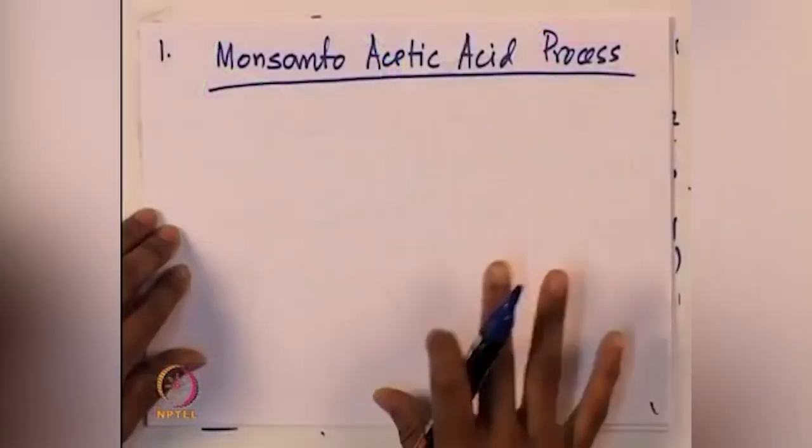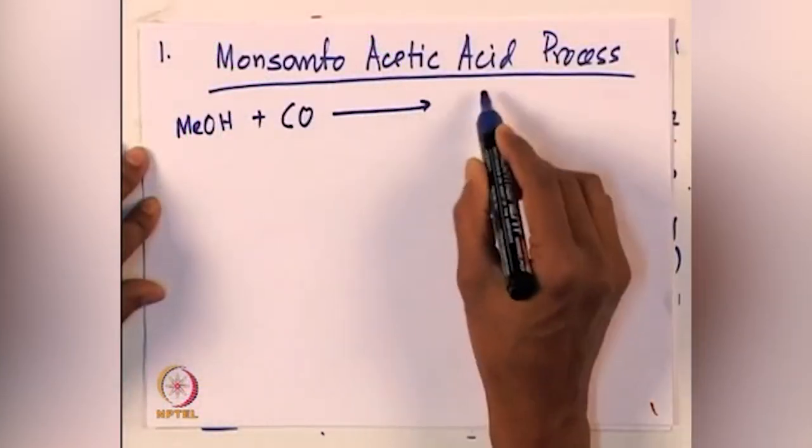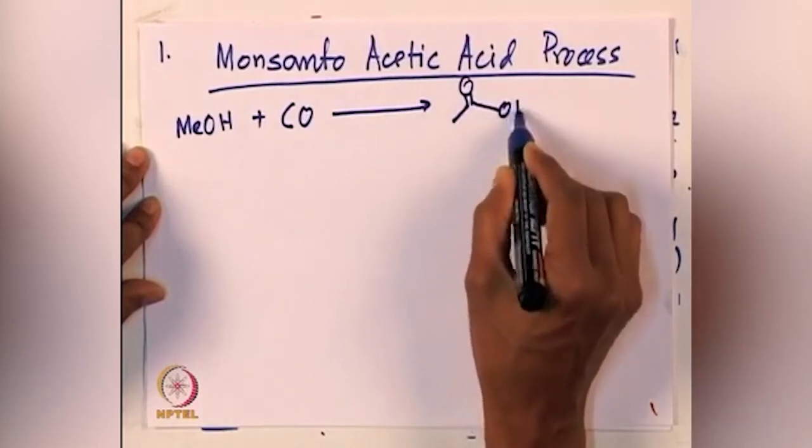Traditionally, carbonylation methods can be of a few different types. One is the Monsanto acetic acid process, another could be hydroformylation, and of course hydrocarboxylation and so on. First we would like to discuss the Monsanto acetic acid process, which involves incorporation of carbon monoxide into the molecule. The Monsanto acetic acid process is the conversion of methanol plus carbon monoxide into the corresponding acetic acid.